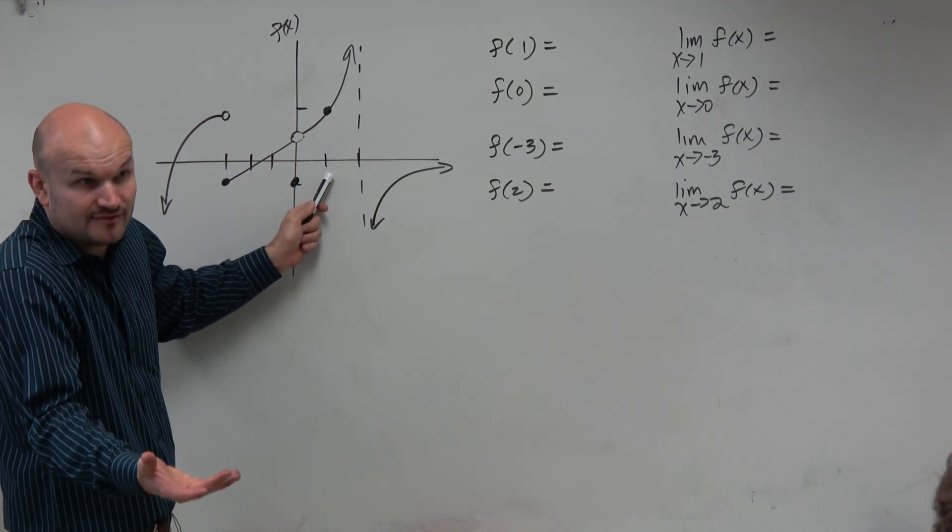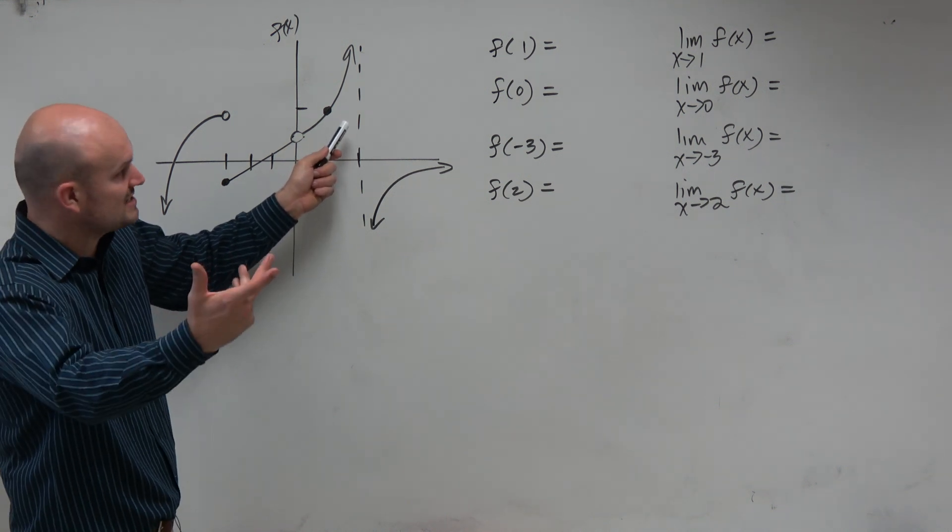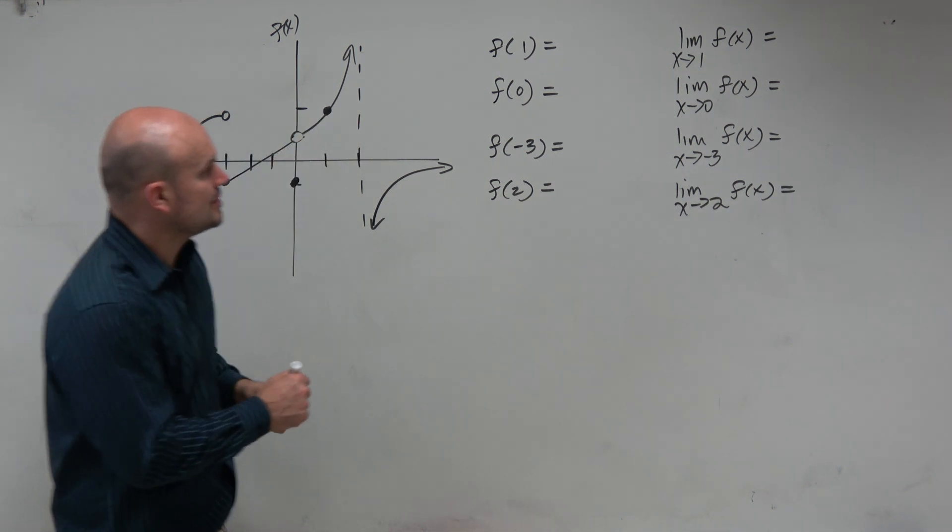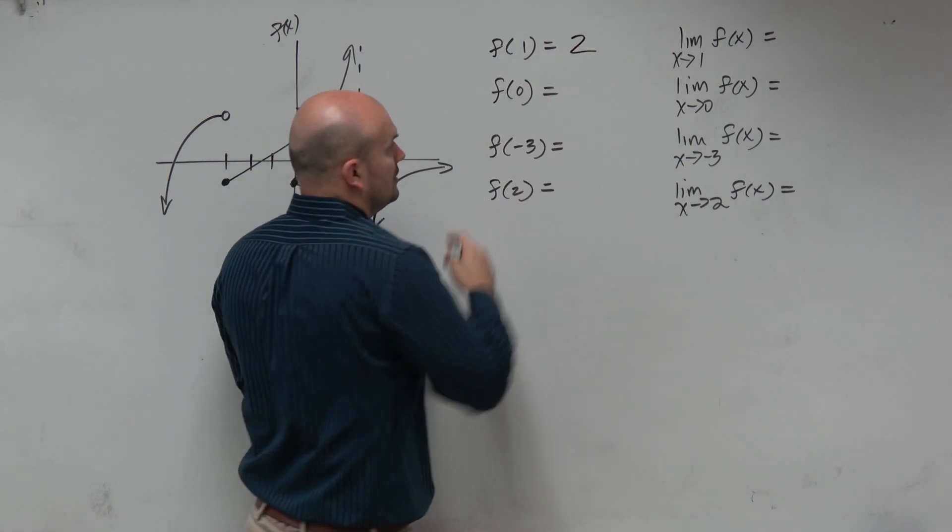Well, the output value, right? That's the value of the function. So we find the y value, or the f of x value, and we see that it is equal to 2. So we say f of 1 is equal to 2.